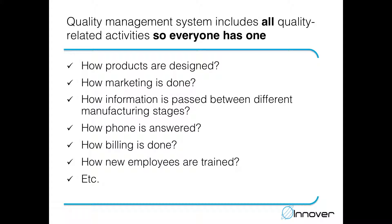The quality management system includes all those different tasks: how you answer the phone, how you bill your customers, how marketing is done, what kind of marketing materials you have, how you design new marketing materials, how different products are designed, what kind of raw materials you use, how information is passed between different manufacturing stages, and how changes are communicated. All those are part of the quality management system you have in place.